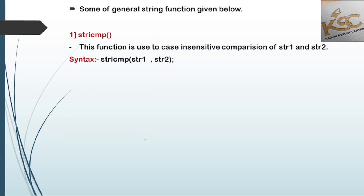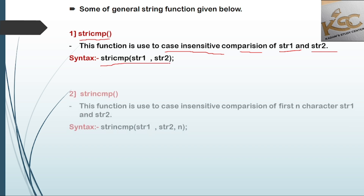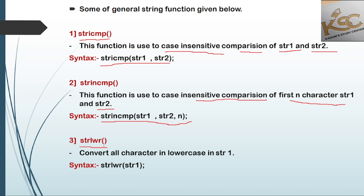Some additional general string functions: stricmp is used for case-insensitive comparison of two strings — both strings must have the same case. There is also strnicmp for case-insensitive comparison of the first n characters of str1 and str2. Syntax: strnicmp(str1, str2, n). Then strlwr converts all characters of a string to lowercase.